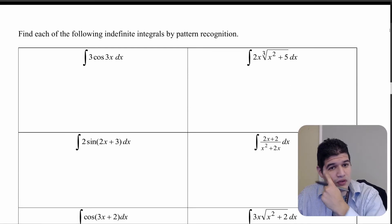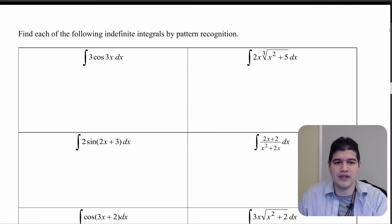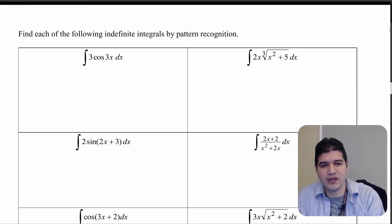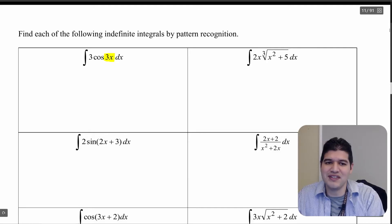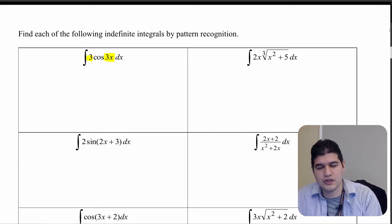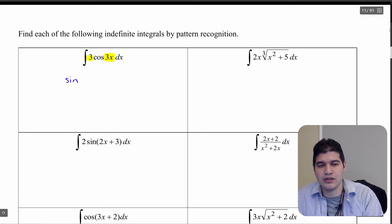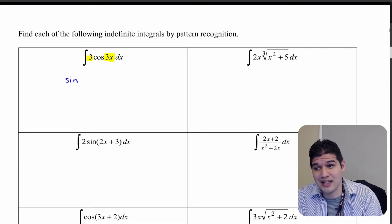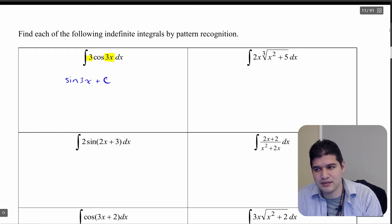In this first problem — 3 cosine of 3x — I'm looking for the inner function, which is 3x, and the derivative 3 is already here. So we can integrate: since we have that pattern, this is just going to be the anti-derivative of cosine, which is sine — keep the inside part — plus c.